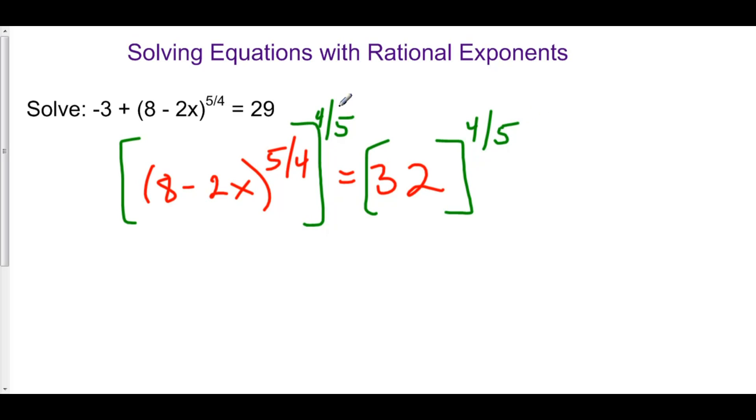Well, when you multiply these exponents, 5 over 4 times 4 over 5, you get 1. So that's just 8 minus 2x. That's awesome.